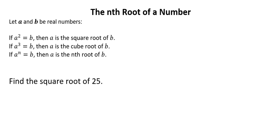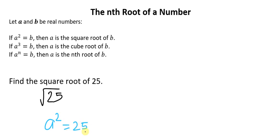For example, find the square root of 25. Let's say the answer of the square root of 25 is a. Then that a, when you square it, the answer is 25. So what number, when squared, gives 25? That is 5. Because 5 squared is 5 times 5, and 5 times 5 is 25. So the square root of 25 is 5.